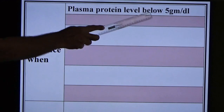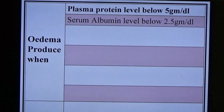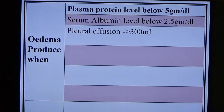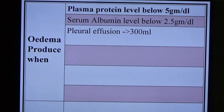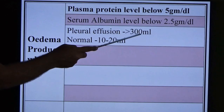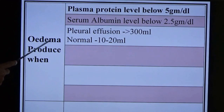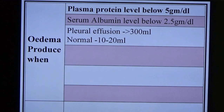Edema is produced when plasma protein level falls below 5 g/dL (normal: 6–8 g/dL) or serum albumin falls below 2.5 g/dL (normal: 3.5–5 g/dL). Pleural effusion: accumulation of fluid more than 300 mL in the pleural cavity (normal pleural fluid: 10–20 mL; effusion when >30 mL). Difference: effusion is fluid accumulation in a serous cavity; edema is accumulation in interstitial tissue.